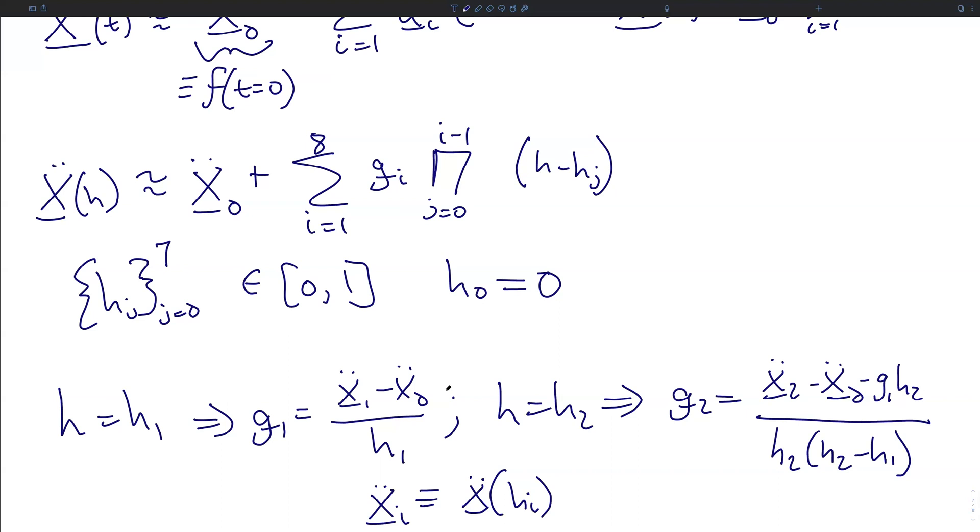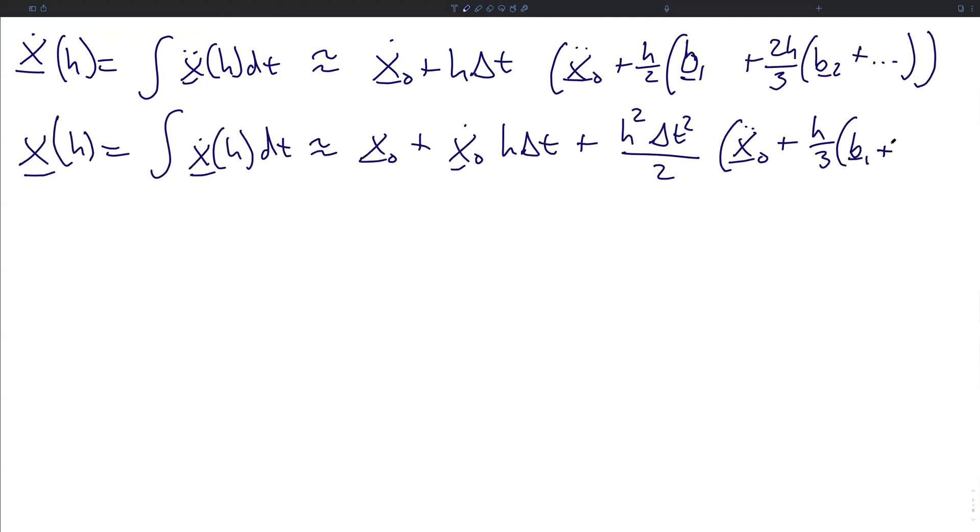We can now integrate this expression twice in order to get values for x dot and x. x dot of h is the integral of x double dot of h in time, and is approximated by x naught dot, so the initial condition first derivative, plus h times the time step delta t, all times x double dot not plus h over 2 times b1 plus 2h over 3 times b2, and so on and so forth, to all of the terms in the series. And similarly, if we integrate this again, we get x of h is the integral of this expression, and will look like the initial condition x naught plus the initial derivative x dot not times h times delta t, plus a similar set of multiplications.